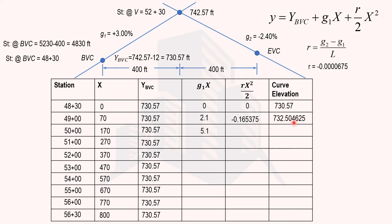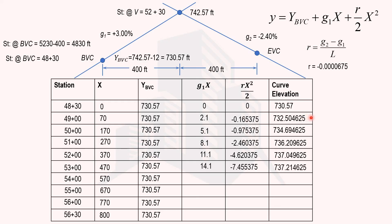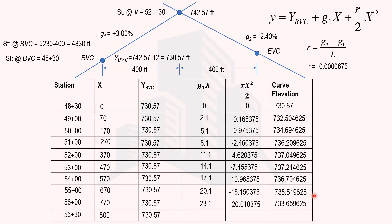Looking at the table, the curve elevation increases up to a certain station, then begins to decrease — indicating we have passed the high point. Beyond that station the curve is declining. The curve elevation at EVC (station 56+30) is 732.97 feet.